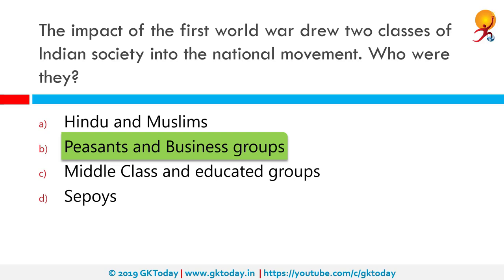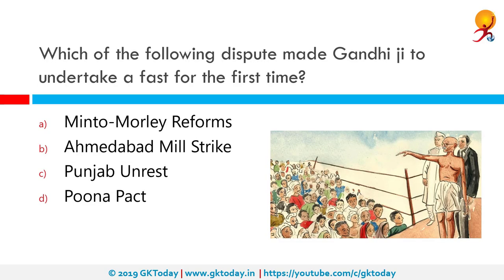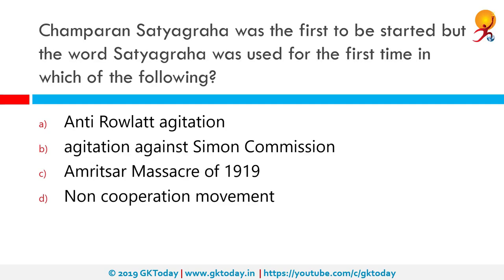Which of the following disputes made Gandhiji undertake a fast for the very first time? The correct answer is the Ahmedabad mill strike. In February-March 1918, there was a conflict between the Gujarat mill owners and workers on the question of a plague bonus. The mill owners wanted to withdraw the bonus while the workers demanded a 50% wage hike.